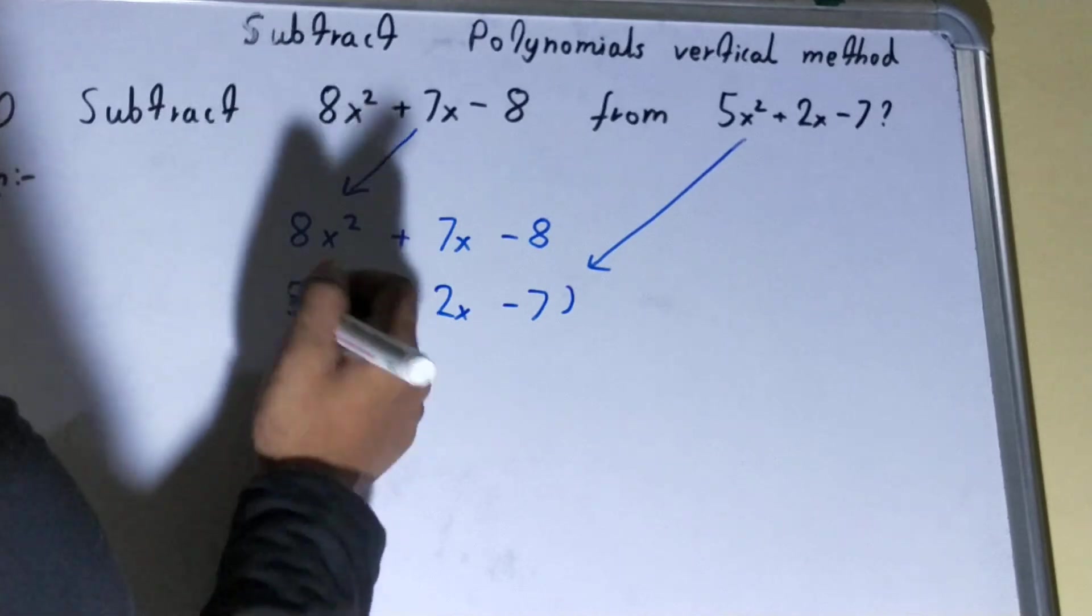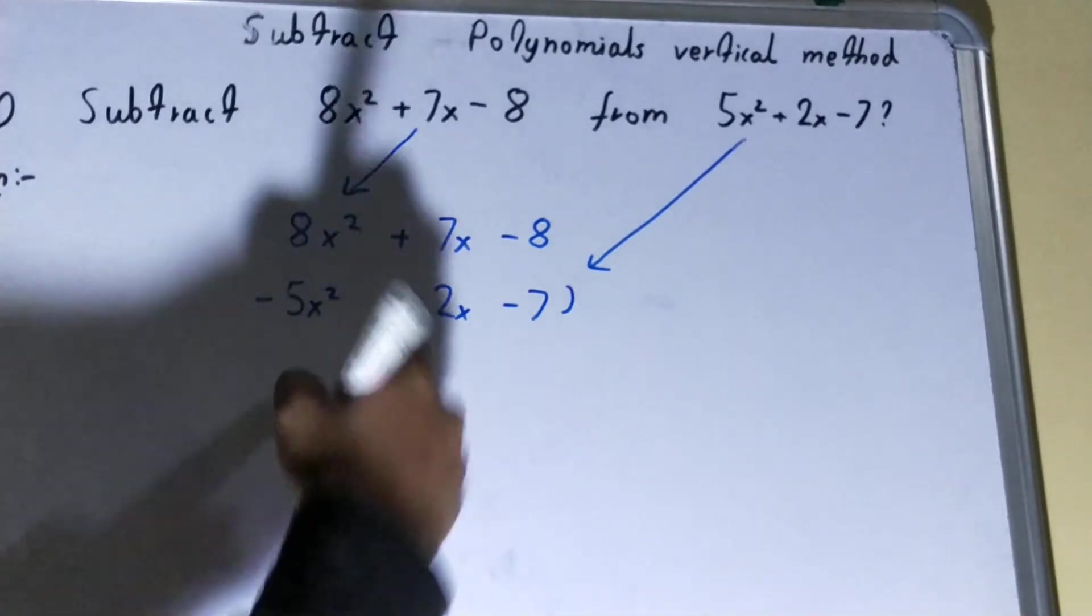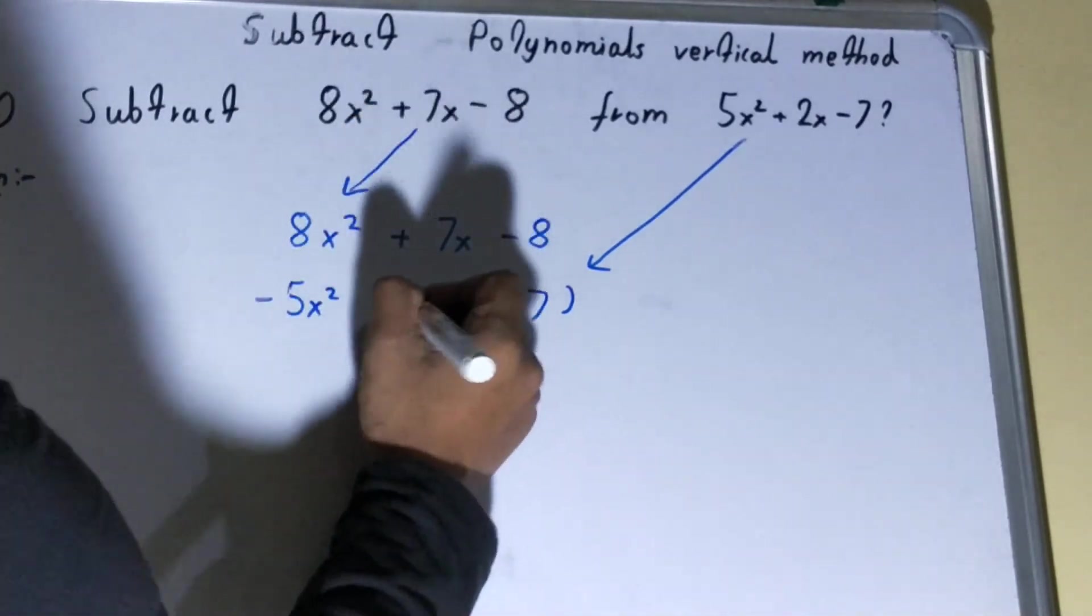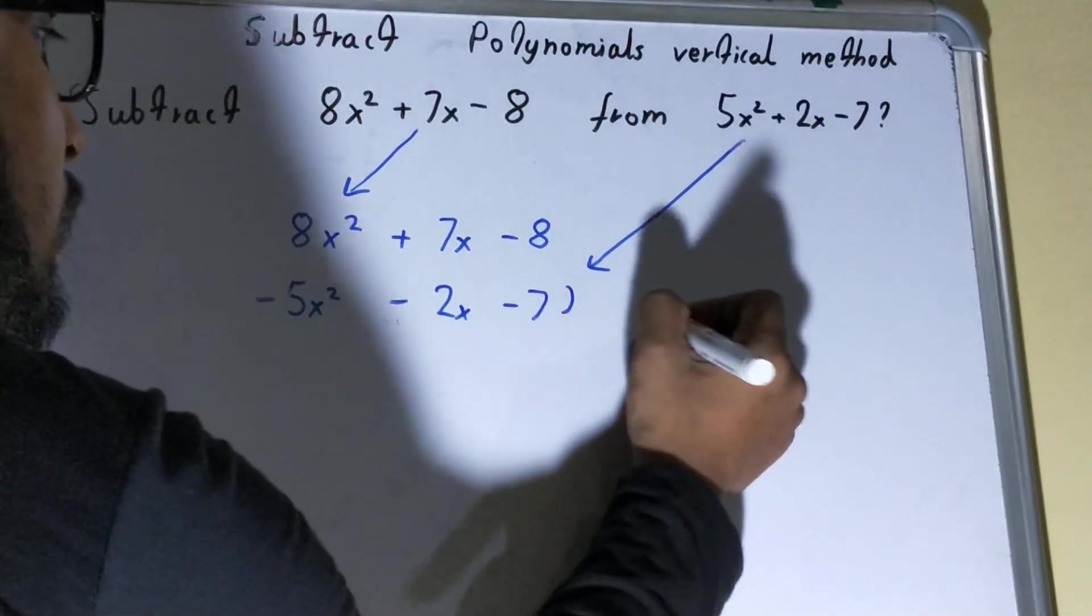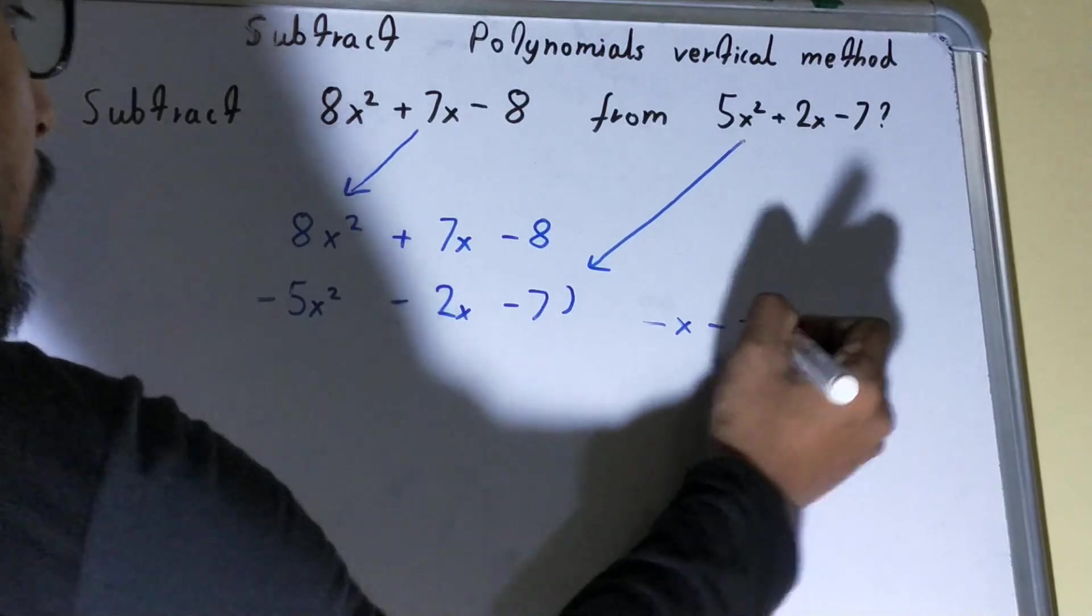So 5x² will become -5x². This is also plus, so this will also become minus. This was already minus, so minus times minus will give us plus. Now for the result: this will be 3x²...